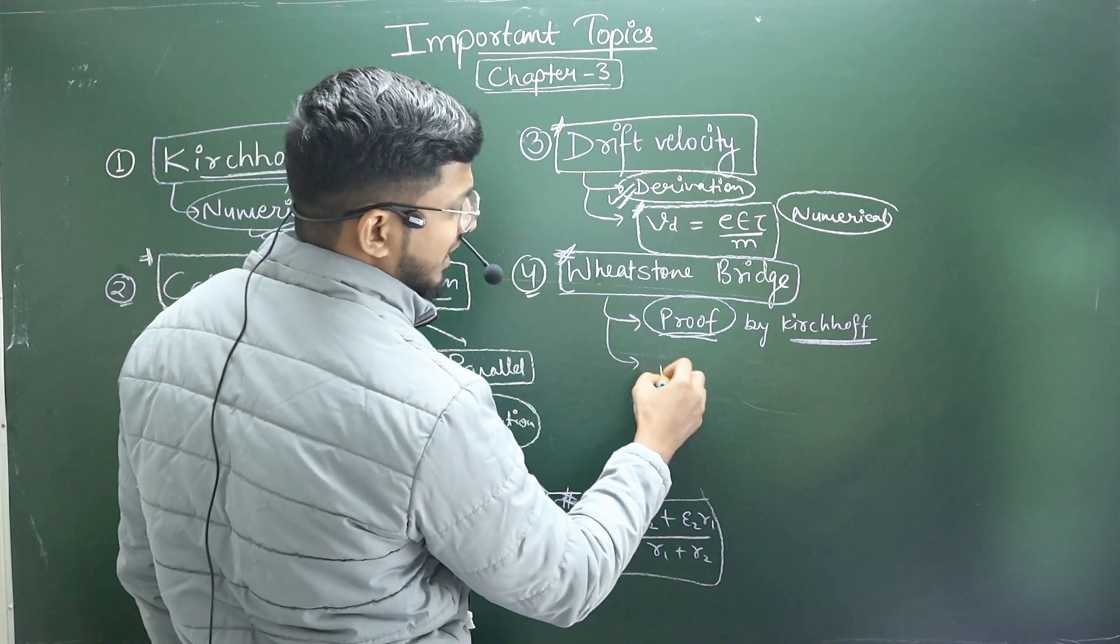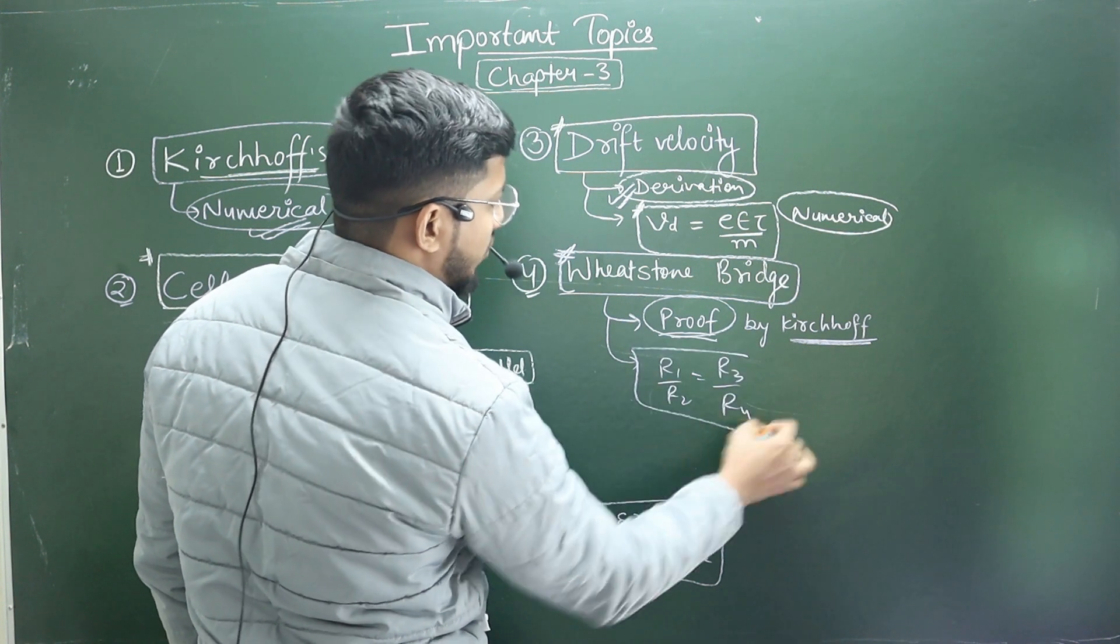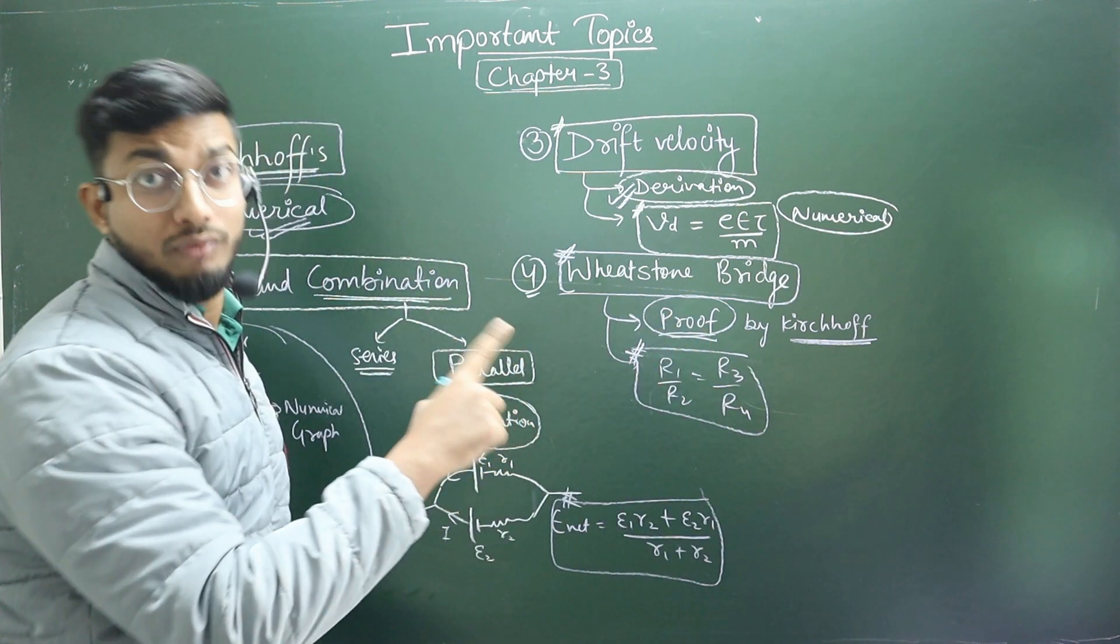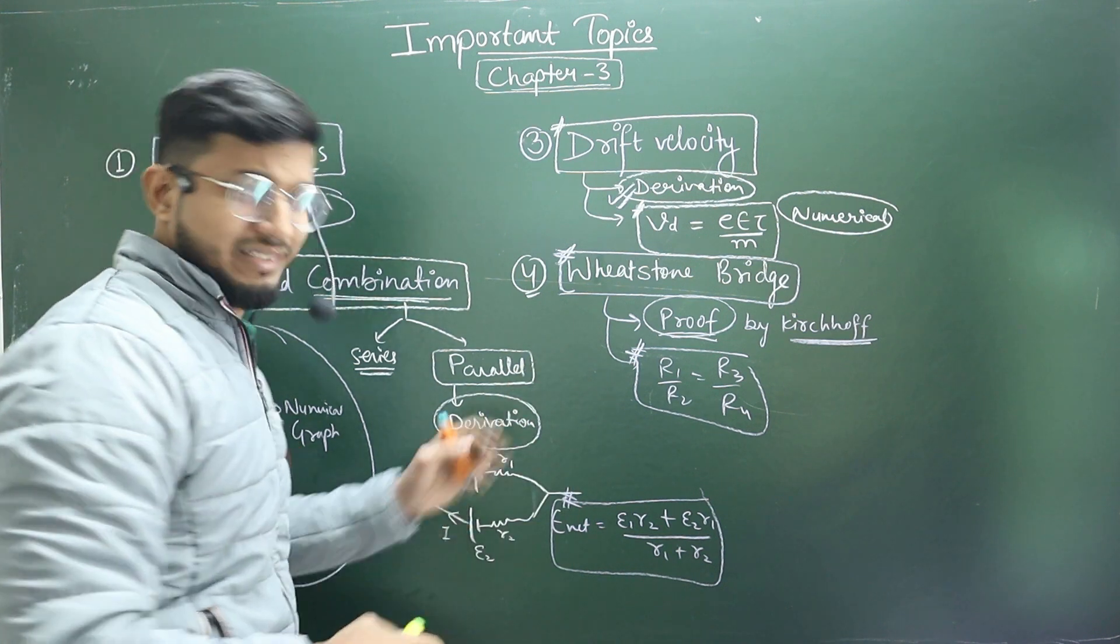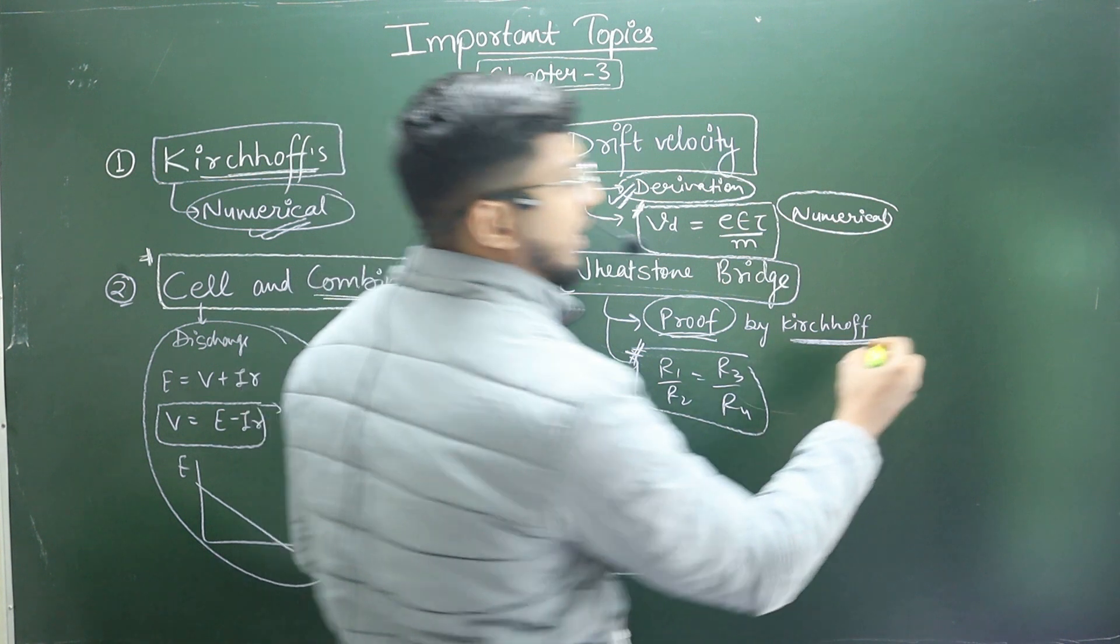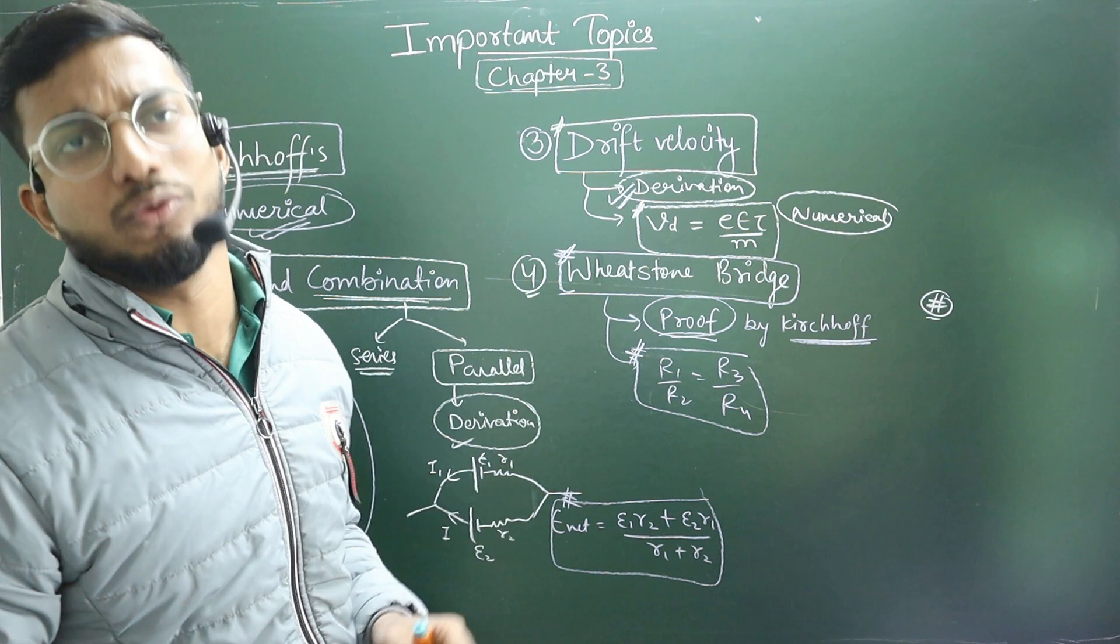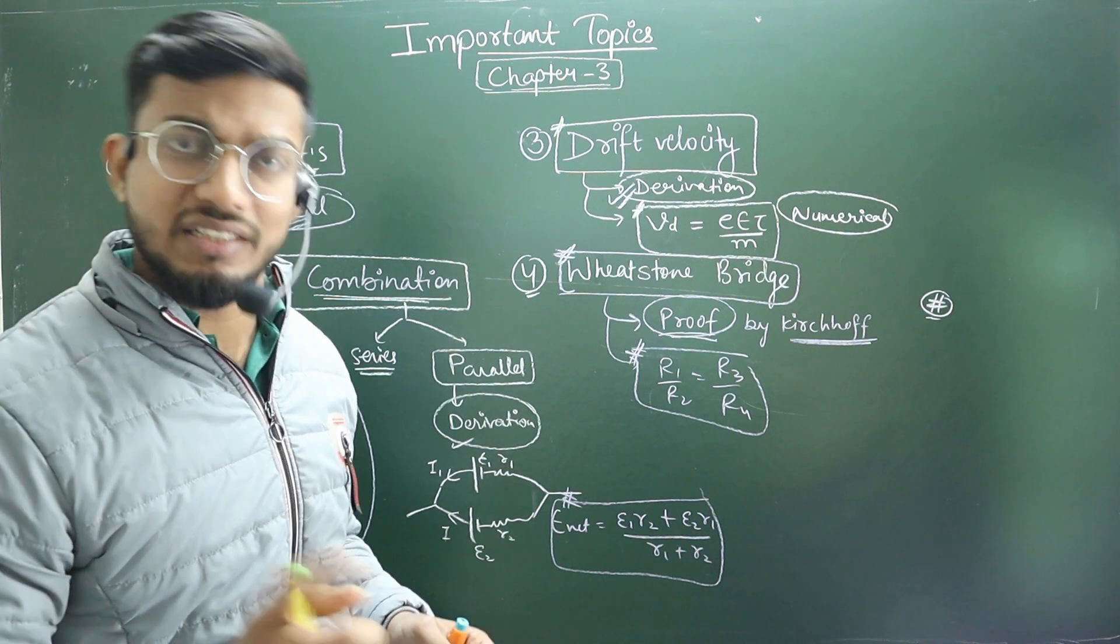And look at 2-4 numerical. R1 upon R2 and R3 upon R4, the basic question is. But it's the main important topic that is proof. Now I have to tell you the second and last topic. Why? Because in one important topic I am telling you, if you have to do all of this, then you have to do it by security. Then you can leave it by leaving it. That's why the question is that we will make a question from the resistance, numericals.